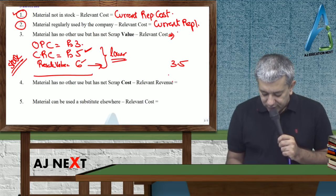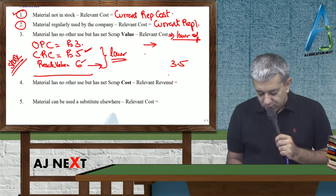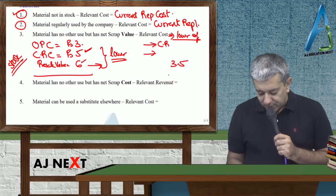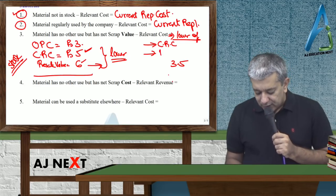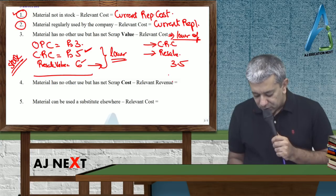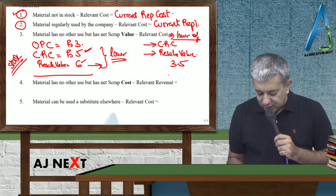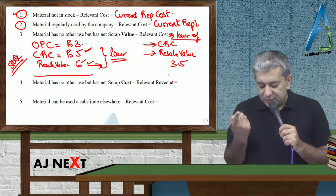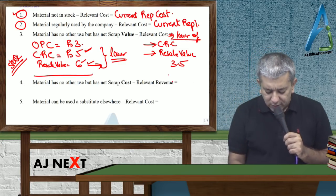Whichever is lower between these two. In the first case 3.5 was lower, that became the answer. In the second case 5 was lower, so that became the answer.